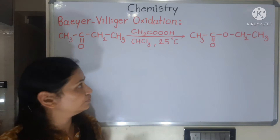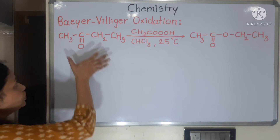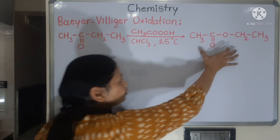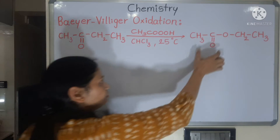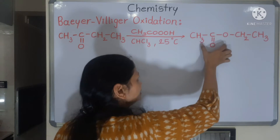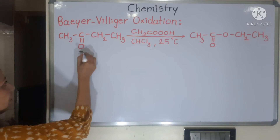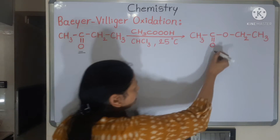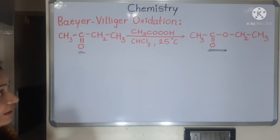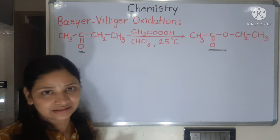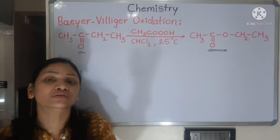Baeyer-Villiger oxidation reaction is nothing but your ketone gets converted into an ester — that is C=O gets converted into C(=O)O. So this is your ketonic group and this is your ester group. Ketone converts into ester in the presence of peracids or peroxides.